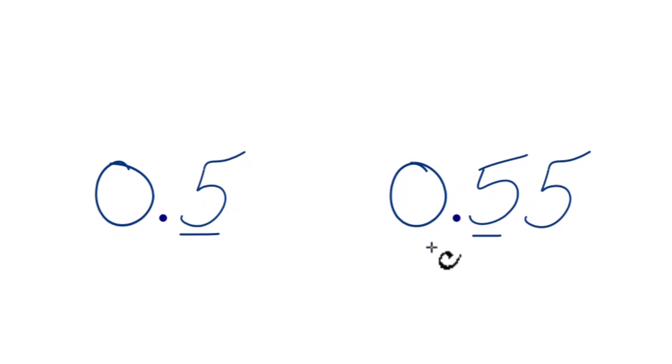Then we can look at the next digit after that one. In this case, there's nothing here. You can consider that to be 0 if you want. So here we have 0 in the hundredths place. Over here, we have 5. 5 is greater than 0. So 0.55 is going to be greater than 0.5. You could call it 0.50.